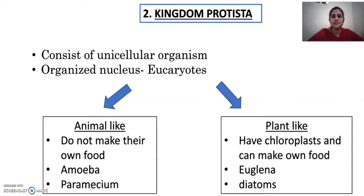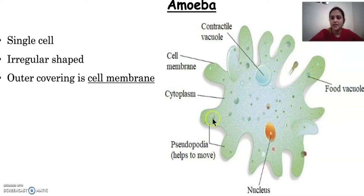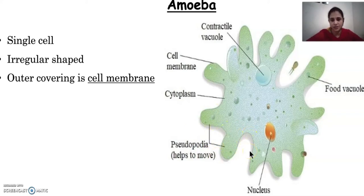Now we will be discussing amoeba, which is the simplest of the unicellular organisms. Here is a diagram of amoeba. You can see it does not have a particular shape — it is irregularly shaped. It has an outer covering which is the cell membrane. It also contains a nucleus, and cytoplasm surrounds the nucleus. It has a contractile vacuole and pseudopodia. Pseudopodia are these finger-like projections formed when cytoplasm moves in one direction.